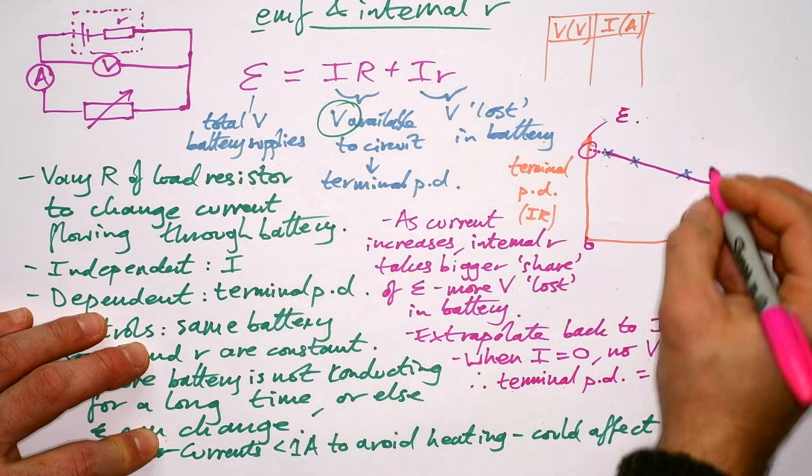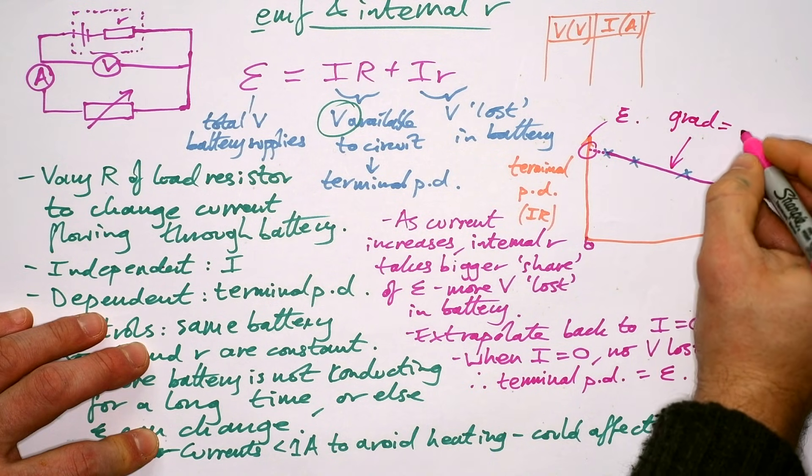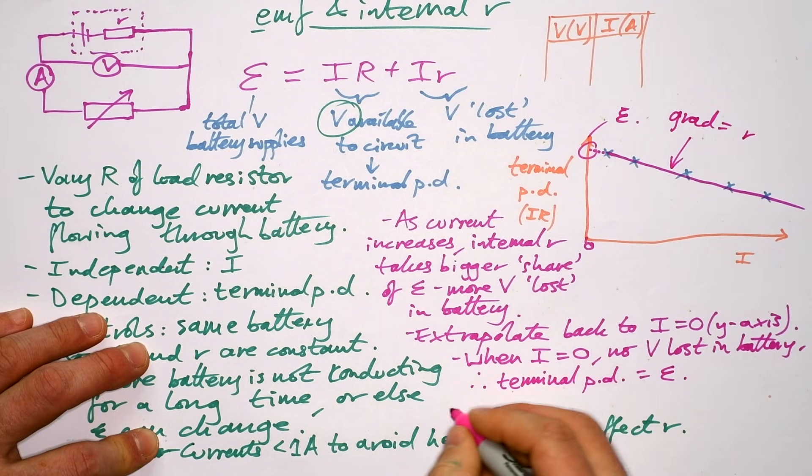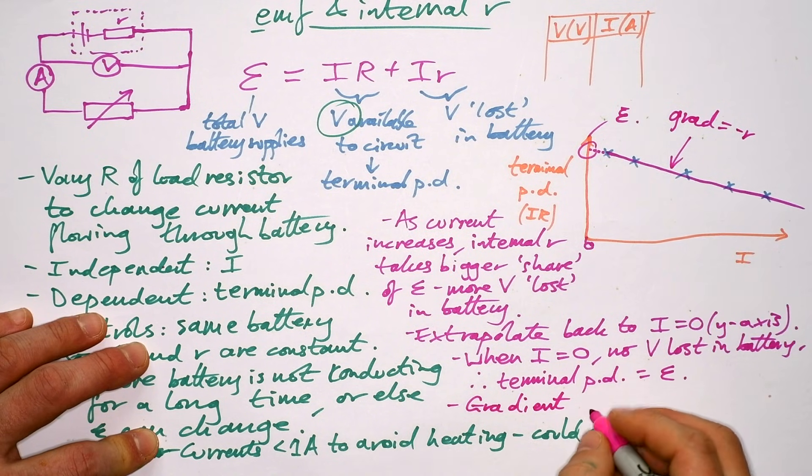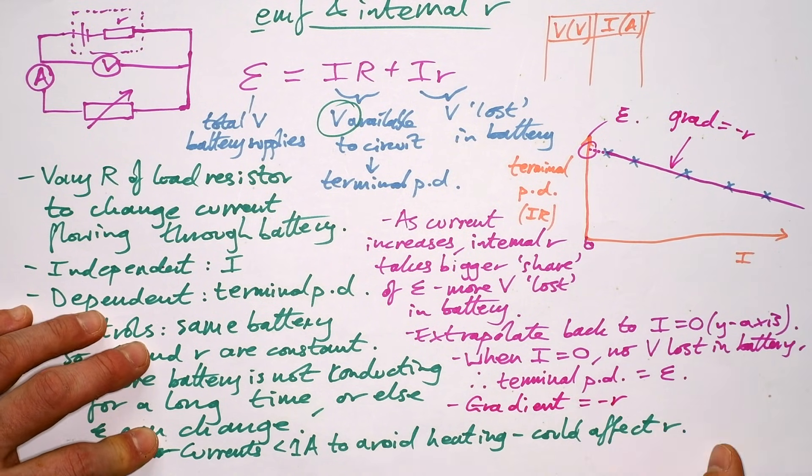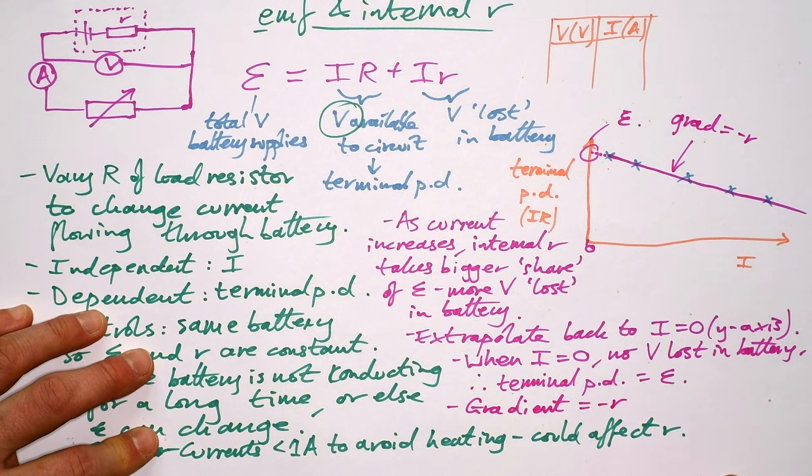There's one more thing that we can do. The gradient of this gives you the internal resistance as well. Of course, because it's going in the negative direction though, it's going to be minus R. So we can get the EMF and the internal resistance from the graph.